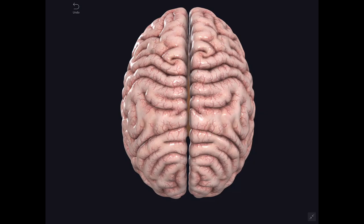In this video, we will study about the gross anatomy of cerebral hemispheres. The cerebral hemispheres are two — you have a right and the left cerebral hemisphere — separated by a median longitudinal fissure. This fissure is complete in front and behind, and in the middle it is occupied by the largest commissural band, that is known as corpus callosum.